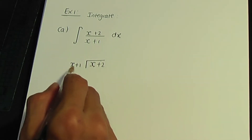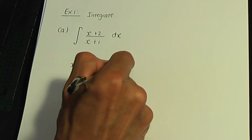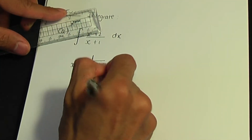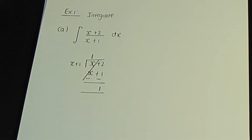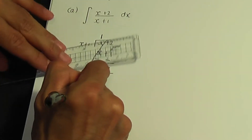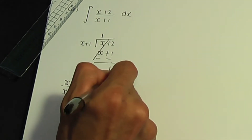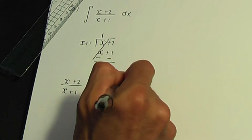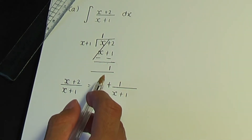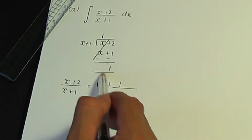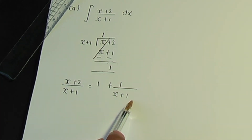When we divide, x divided by x is 1. Multiplying 1 by x plus 1 gives x plus 1. When we subtract, the remainder is 2 minus 1, which is 1. So we can rewrite x plus 2 over x plus 1 as 1 plus 1 over x plus 1. That is: the quotient plus the remainder divided by the divisor.